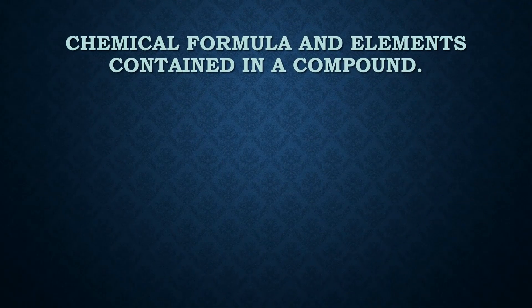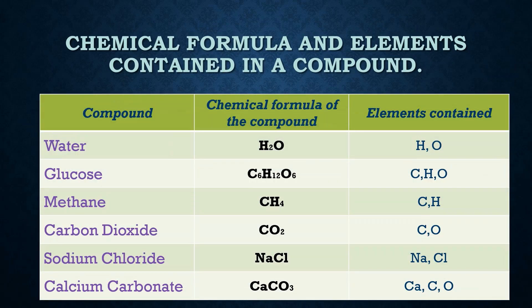This table shows three columns: the first is the compound name, the second is the chemical formula of the compound, and the third is the elements it contains.